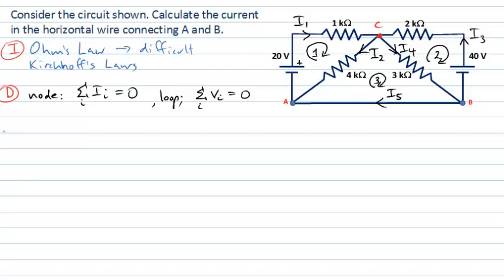Let's move to our evaluation stage. We need to construct these equations from Kirchhoff's laws. Let's begin with the node law, starting at node C. I1 is going in to node C, and I2 is coming out — so minus I2. I3 is also coming into that node, so that's a positive contribution. And I4 is leaving — so minus I4. All the currents at that node sum to zero: I1 − I2 + I3 − I4 = 0.